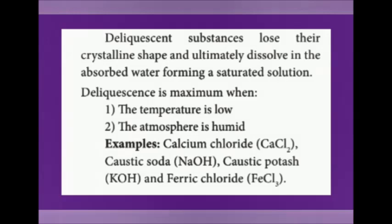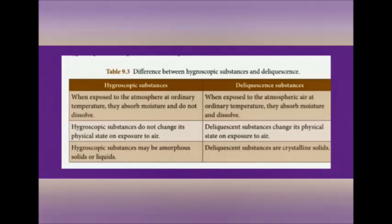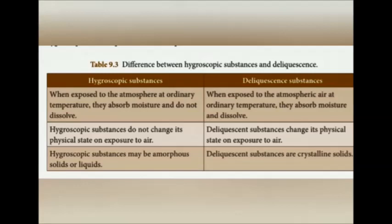What is a deliquescent substance? Some substances absorb moisture when kept in atmospheric air and dissolve, losing their crystalline shape. Those substances are called deliquescent substances. Deliquescence is maximum when temperature is low and the atmosphere is humid. Difference: both hygroscopic and deliquescent substances absorb moisture, but hygroscopic substances do not dissolve or change their physical state, whereas deliquescent substances absorb moisture, completely dissolve, and change their physical state. Hygroscopic substances may be amorphous solids or liquids; deliquescent substances are crystalline solids.